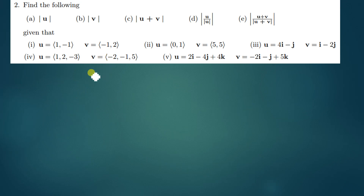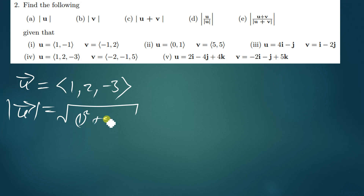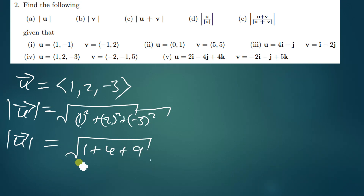Let's move on to the one that is in 3D. We have U = [1, 2, −3]. The magnitude of this vector U is given by the square root of 1 squared plus 2 squared plus (−3) squared, which equals the square root of 1 plus 4 plus 9. So 1 plus 4 gives us 5, plus 9 gives us 14, and the magnitude of U gives us the square root of 14.